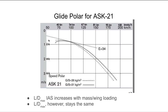If we look at the polar curve for the K21, the origin is up here somewhere, and we can draw a tangent from the origin down to the curve. If we project up to the x-axis where that tangent point is, we can get the airspeed at which the L over D max is achieved. And if we look at the highest point of the curve, this is the speed at which we sink the least, and therefore is our minimum sink speed.